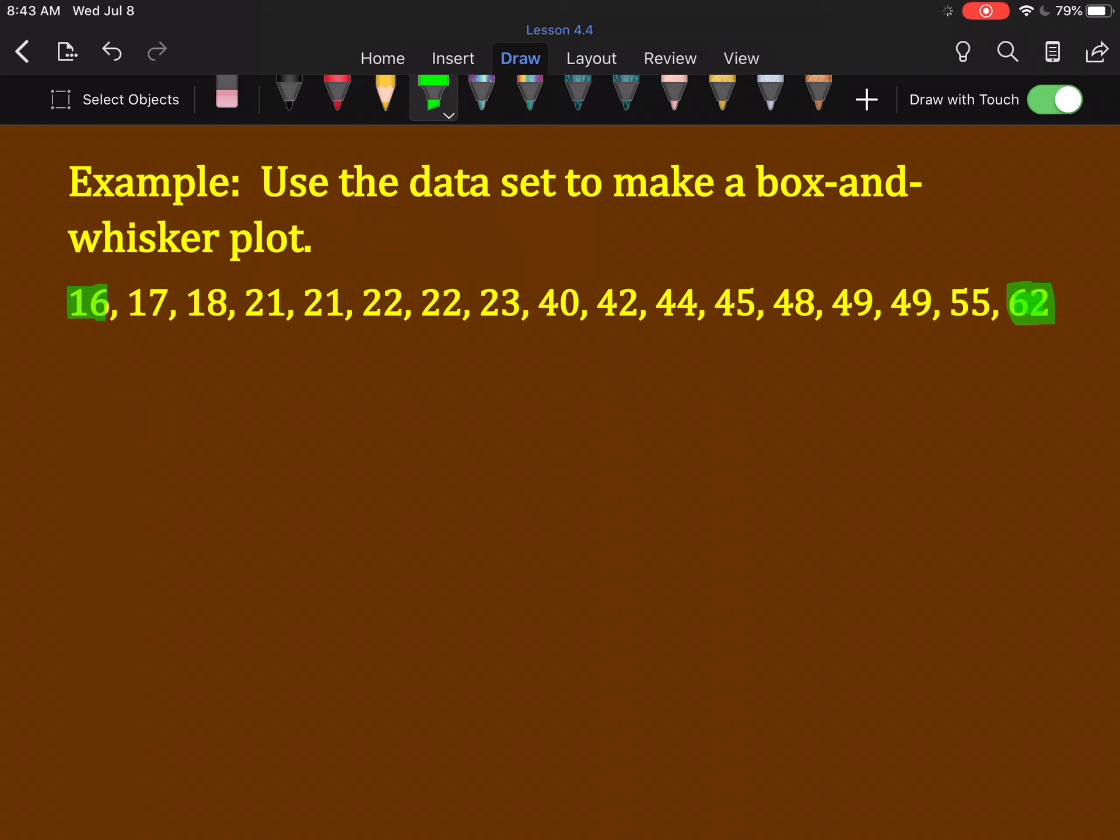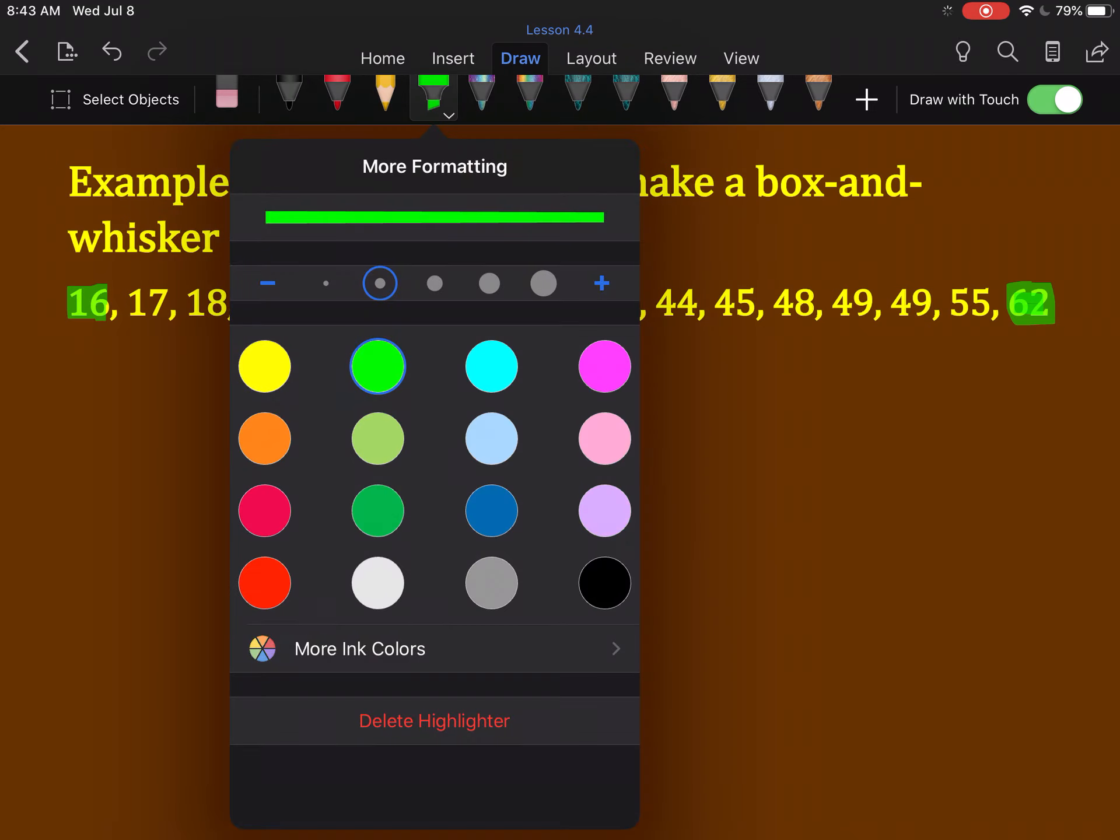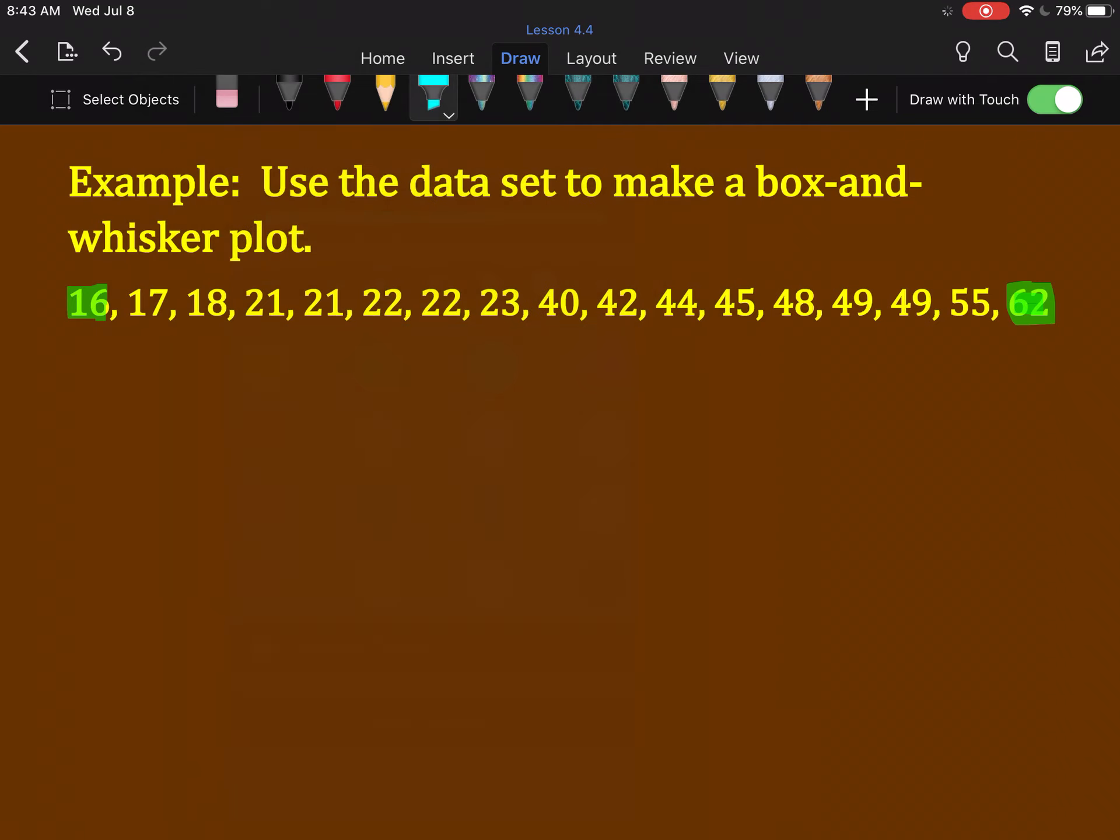17 divided by 2 is 8.5. That means the ninth number in this set will be the median, we round up. So, I'm saying 40 is the median.